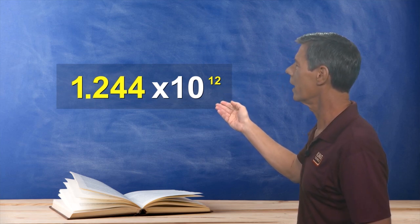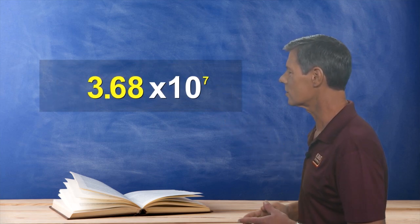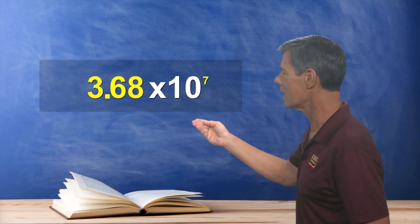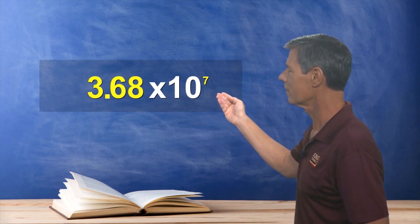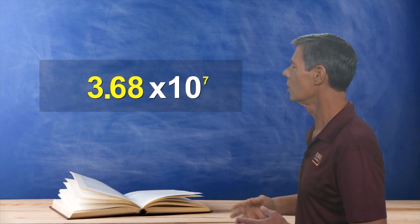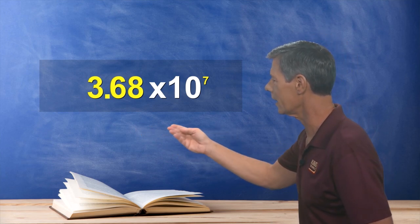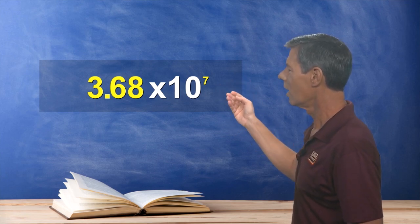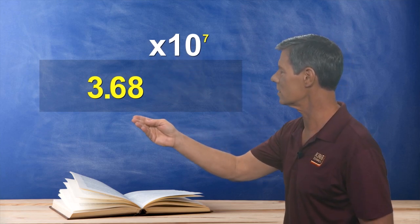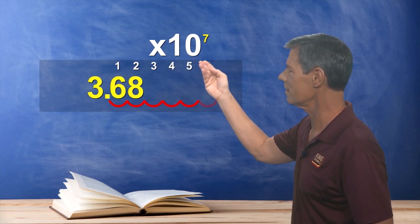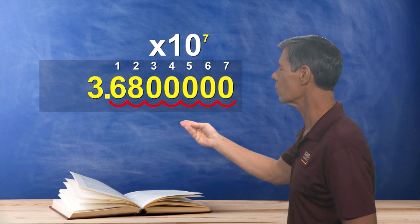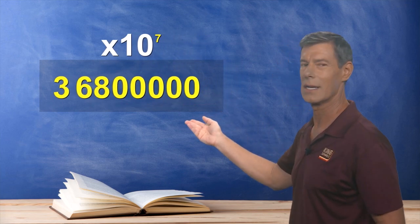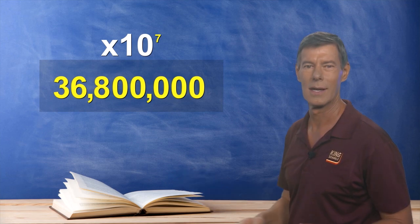Now converting the other way is just as easy. So let's give it a try with this example right here. 3.68 times 10 to the 7th power. Now to convert it back to standard notation, we just move the decimal back to the right. And to figure out how many places you move the decimal point, just look right here. Our number is 3.68 times 10 to the 7th power. So we just move the decimal point to the right 7 places, making it 36,800,000 in standard notation.